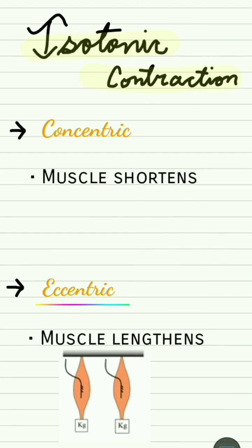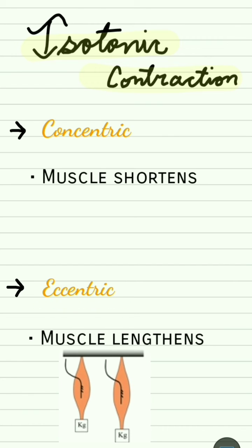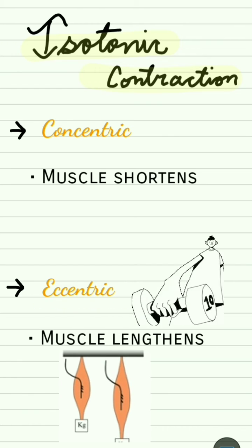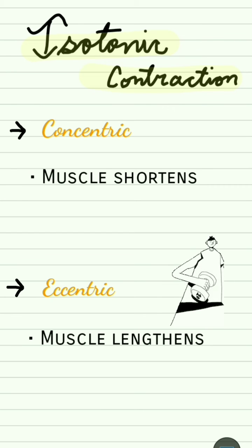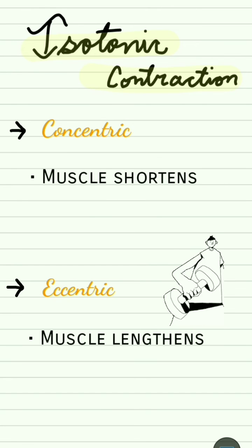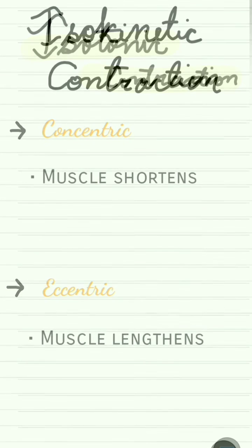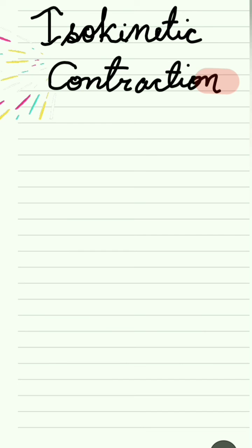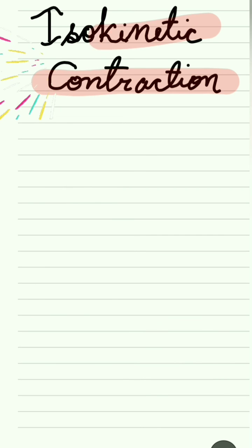In eccentric contraction, for example in the same image, whenever the dumbbell is being lowered down to the ground, the arm is lengthened and so the muscle is also lengthened. There is also another type of contraction, keeping aside isotonic and isometric.